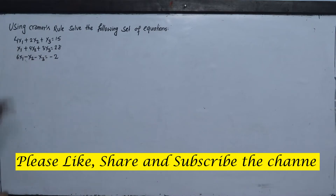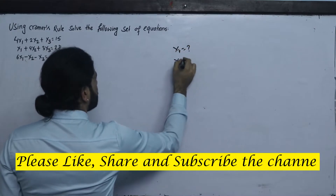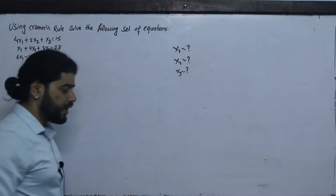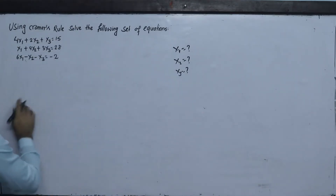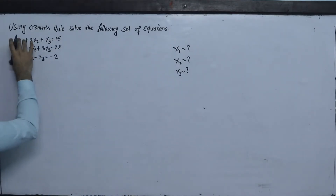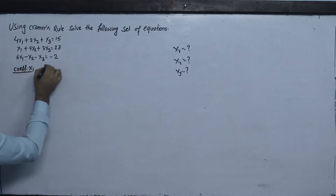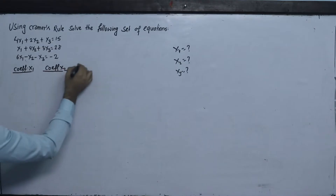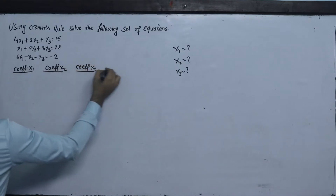We'll solve for x1, x2, and x3. We'll solve this using the coefficient matrix approach. We extract the coefficient of x1, the coefficient of x2, the coefficient of x3, and the constant terms.